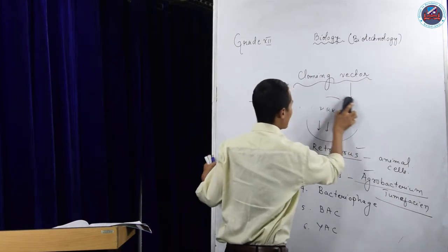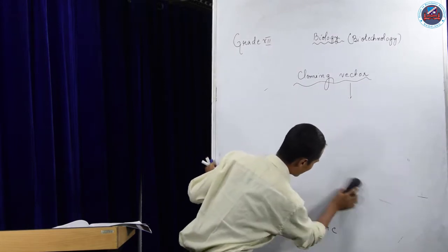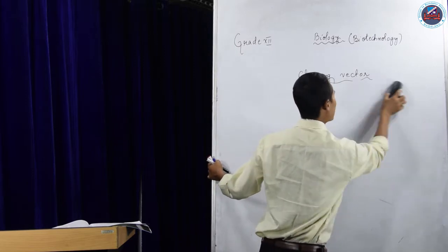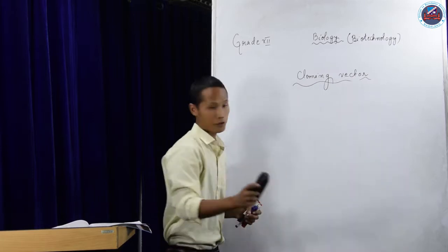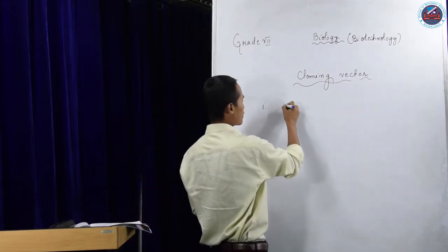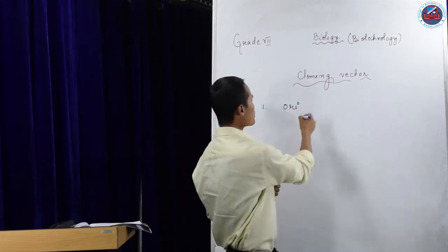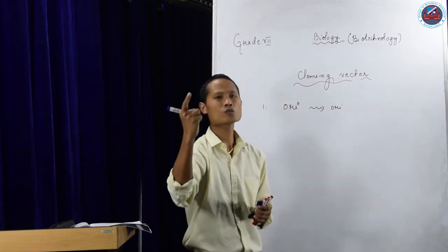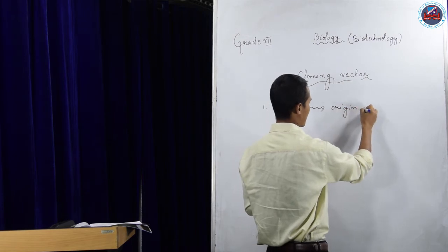Now let's see the characteristic features of the cloning vector. What characteristics should they have to be a cloning vector? The first one is ORI — they should have ORI. ORI means origin of replication. Each vector should have at least one ORI.